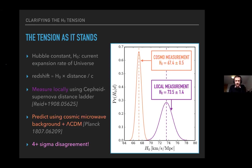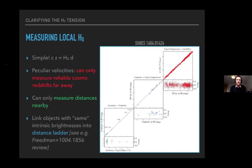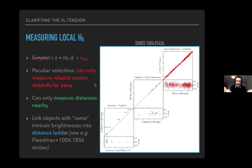Let's look at the local direct measurement in detail. Hubble told us we just need to calculate redshifts and distances — but it's never that simple. The main complication is that objects don't just sit still in the Hubble flow; they get attracted by other massive objects and have their own peculiar velocities. These peculiar velocities dominate over the expansion term out to some distance — maybe 100 megaparsecs — so measuring distances to sufficiently far objects is challenging.